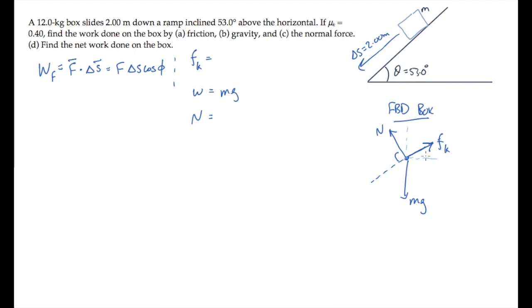If we draw some reference lines and an xy coordinate system rotated to align with the ramp, we can draw these angles which are all theta. The weight has a y component of length mg cosine theta, and the x component has a length of mg sine theta.